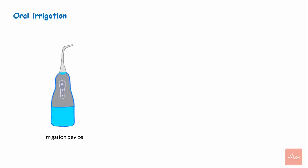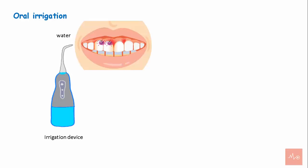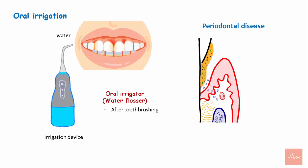Oral irrigation is a technique that uses a device with water or other solutions to assist plaque removal. The device is called an oral irrigator, or more commonly a water flosser, and is used after tooth brushing.